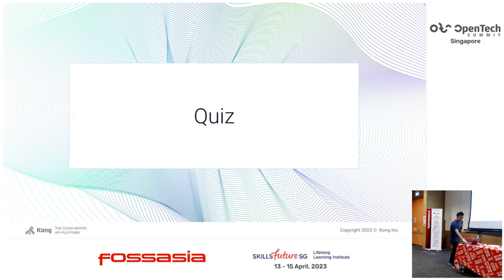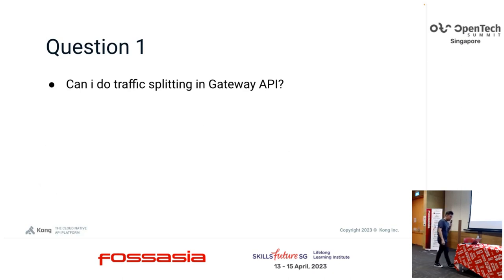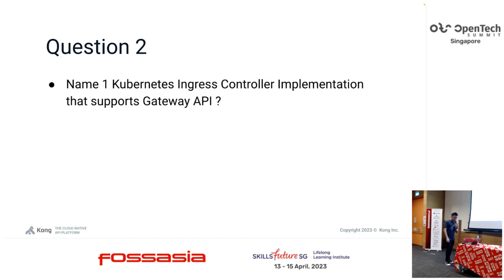Quiz time! Question one: can you do traffic splitting in Gateway API? Yes - our friend from API6 got it. You cannot answer the next question, give others a chance. Question two: name one Kubernetes ingress controller implementation that supports Gateway API - which I've been talking about for the past 15 to 20 minutes.